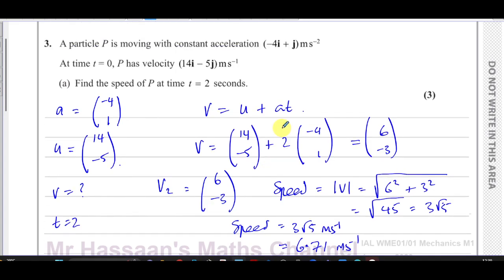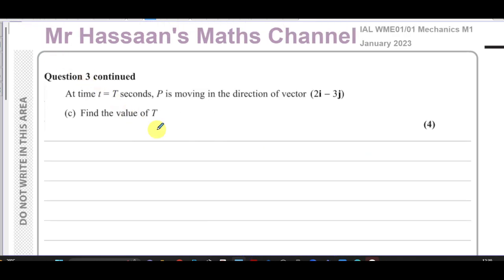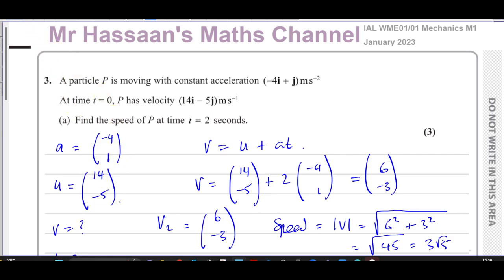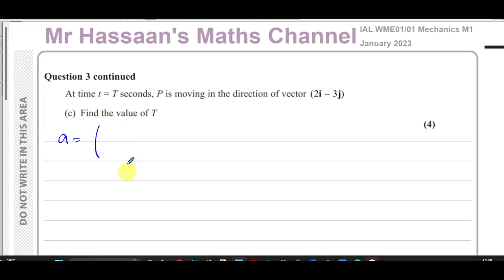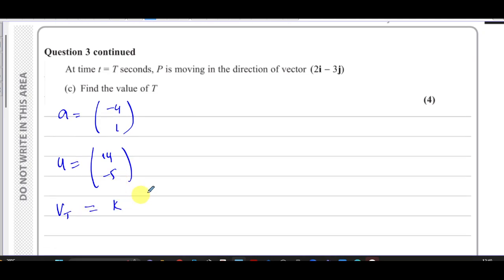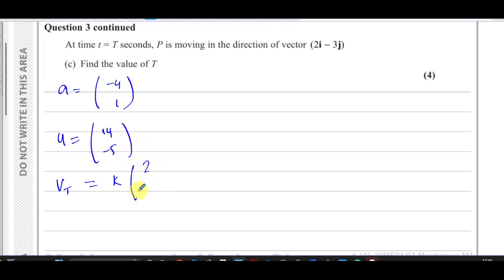For part c: at time t = T seconds, P is moving in the direction of the vector 2i - 3j. Find the value of T. So after T seconds the particle is moving in this direction. We use v = u + aT again. We know a = (-4, 1) and the initial velocity at t=0 is u = (14, -5).